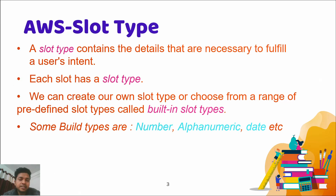Slot type is like related to data type. Like suppose if you are defining any age in JavaScript — you define age is equal to 18 — so on that time age should be a number. Here number is a data type. The same thing is here: when you define a slot, the slot has a slot type. It can be either custom or some predefined.